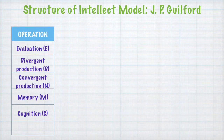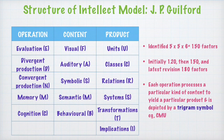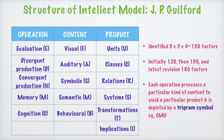In this way, Guilford was able to arrive at 150 factors of intelligence: 5 operations × 5 kinds of contents × 6 kinds of products = 150 different factors. Initially he came up with 120 factors, which were then raised to 150. The latest Structure of Intellect model has 180 factors, because Guilford divided memory into long-term memory and short-term memory, increasing operations to six. It is noteworthy that each operation processes a particular kind of content to yield a particular product, and each such combination is depicted by a trigram symbol.